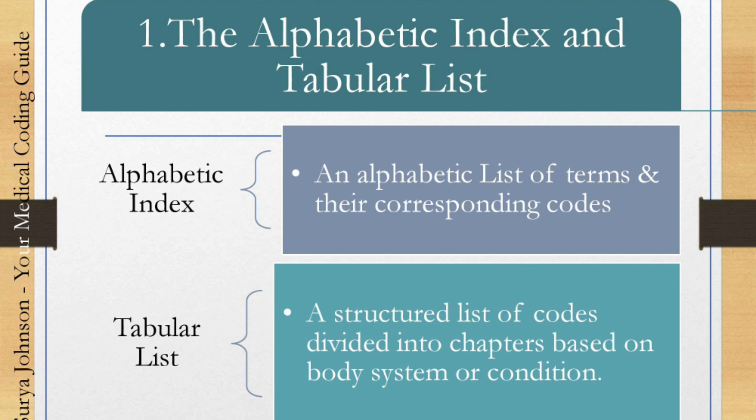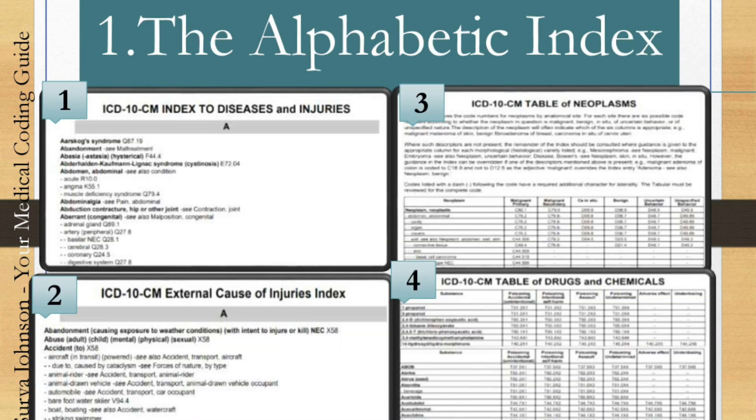What is the alphabetic index? It is a list of terms and their corresponding codes. What is the tabular list? It is a structured list of codes divided into chapters based on body system or condition. The alphabetic index is further divided into four types.